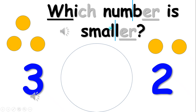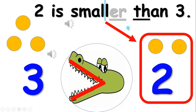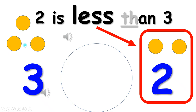Which number is smaller? Very good. Two is smaller than three. Notice how the alligator doesn't open his mouth to the smaller number. Instead of saying smaller than, you can also say less than. Two is less than three.